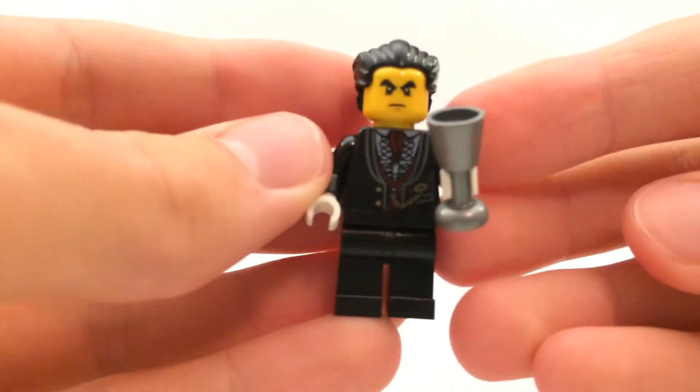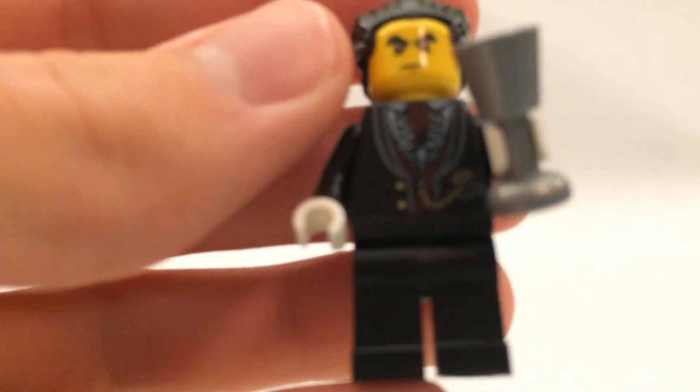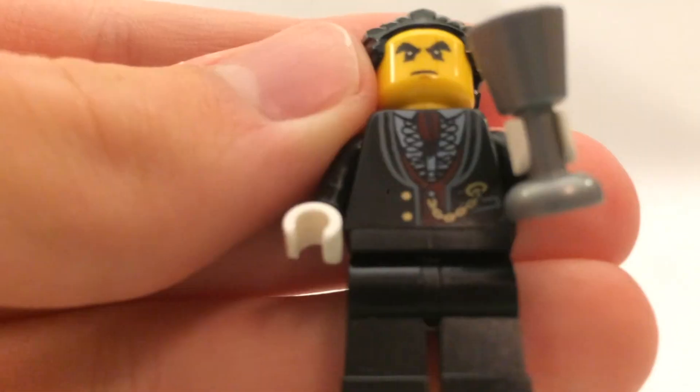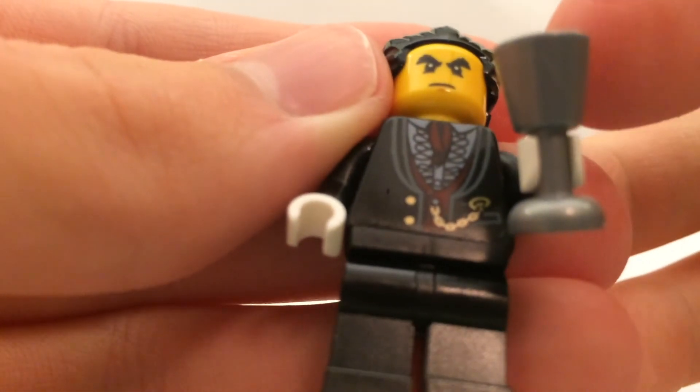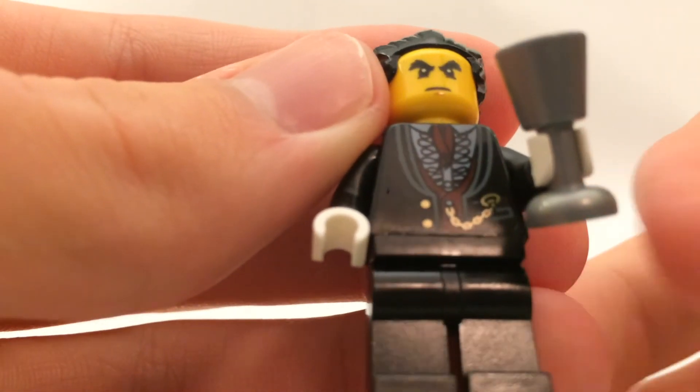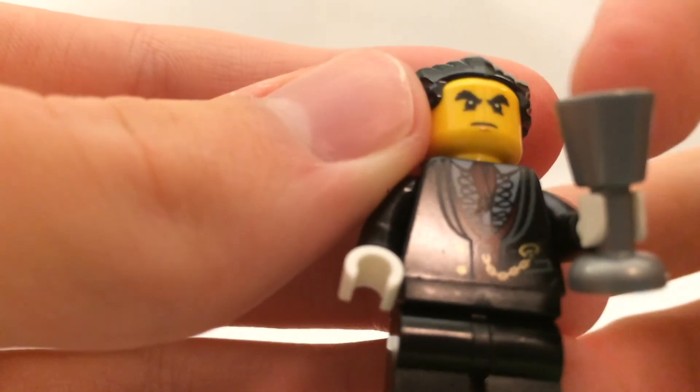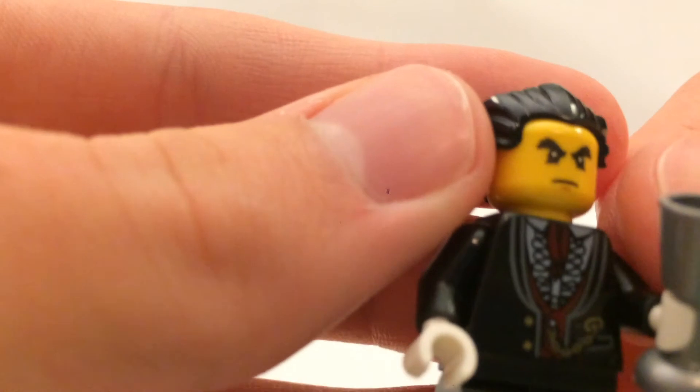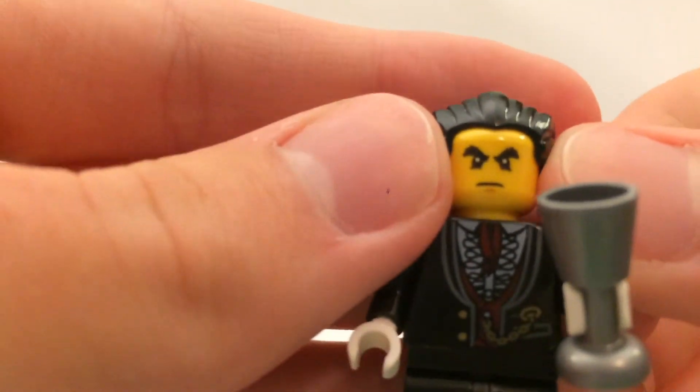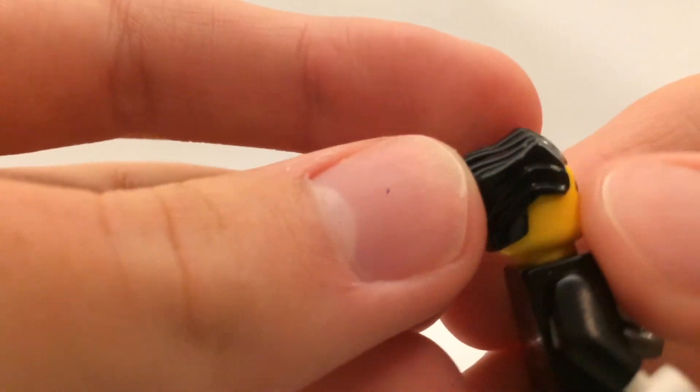Here is the vampire figure. Very cool. He has pretty cool printing on the front of his torso. You have details of a ruffled shirt, and then you have a pocket watch details down there, as well as the pocket of the watch going into a tie and et cetera. His face kind of reminds me of Kohl's. It actually might be the Kohl head. I can't tell. He has swooped back hair. I believe his hair is also used for the Joker minifigure in green in the DC sets.